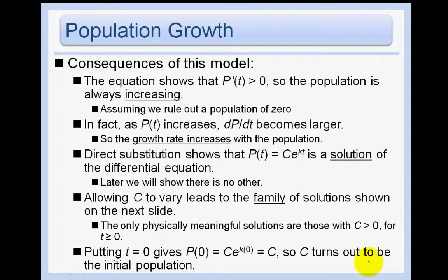Consequences of this model: the equation shows that p'(t), or dp/dt, is greater than 0, so that the population is always increasing, assuming we rule out a population of 0. In fact, as the population increases, dp/dt becomes larger, so the growth rate increases with the population, which makes sense.